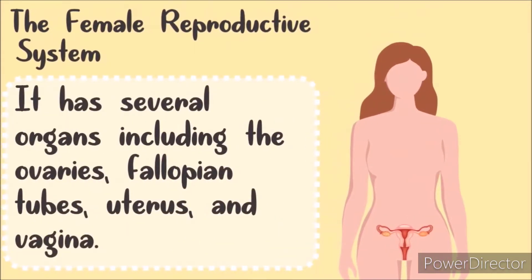The female reproductive system is made up of several organs which include the ovaries, fallopian tube, uterus, and vagina.